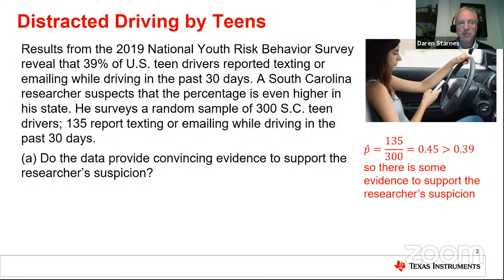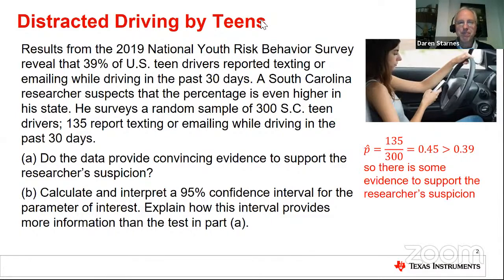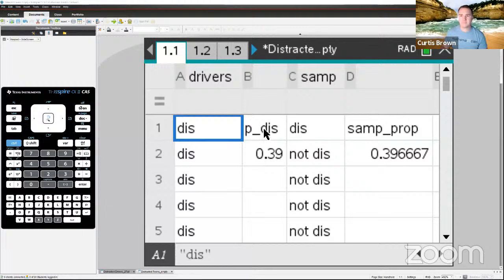It's also possible that the truth in South Carolina is 39%, and the random sample just happened to produce 45%. That's the idea we're going to explore. After Curtis demonstrates a simulation on the TI-Nspire, we'll calculate and interpret a 95% confidence interval and address how it relates to the significance test.